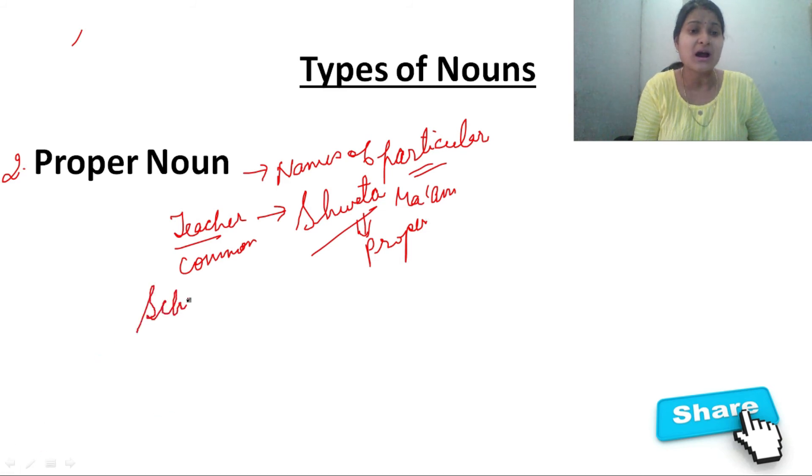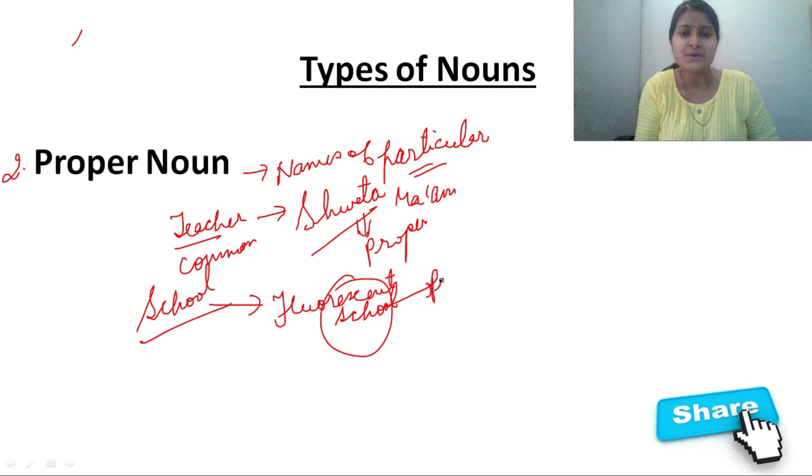Shweta ma'am, it becomes a proper noun, right. When you talk of school, school was a common noun, but when you talk of your school, that is Florescent School, then it becomes what? Florescent School, it becomes a proper noun. So have you understood what is common noun and proper noun?